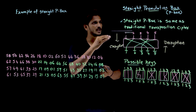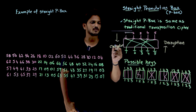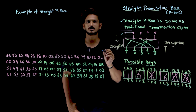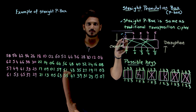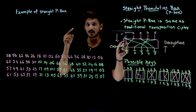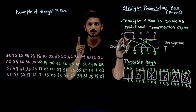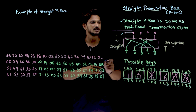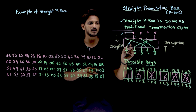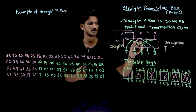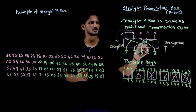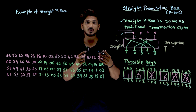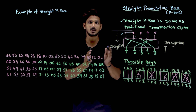Let us understand what we do in the Stride Permutation Box. During encryption, suppose we have 5 bits: 1, 2, 3, 4, 5 — bits meaning 0 or 1. The first position bit in the plain text will be positioned to the 4th position in the cipher text. Similarly, the second position bit will be placed in the 1st position, the third in the 5th position, the fourth in the 3rd position, and the fifth in the 2nd position. This is how we perform permutation of bits in the Stride Permutation Box.